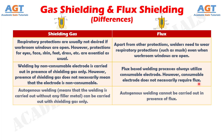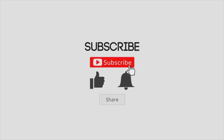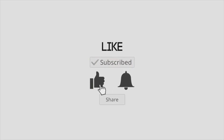And Difference Number 8: Autogenous welding — that is, welding carried out without any filler metal — can be carried out with shielding gas only, whereas autogenous welding cannot be carried out in the presence of flux.